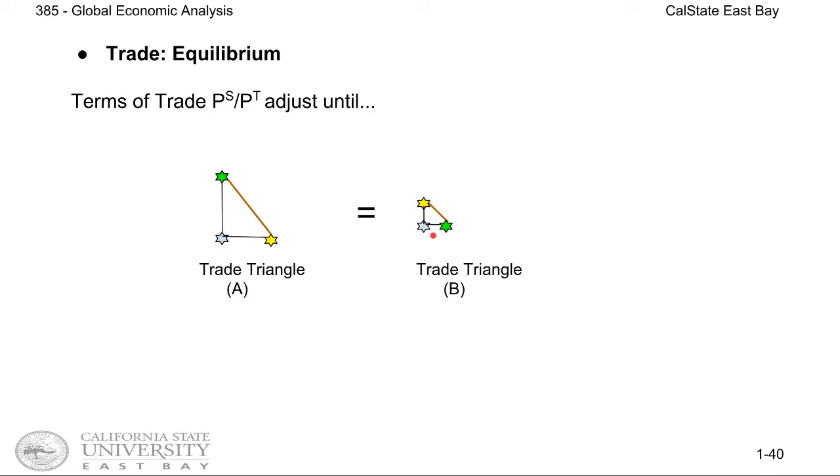So what's going to make sure that country A and country B reach an agreement is that this relative price, PS over PT, is going to adjust until how much soybean country A wants to sell to B is equal to how much soybean country B wants to buy from country A.